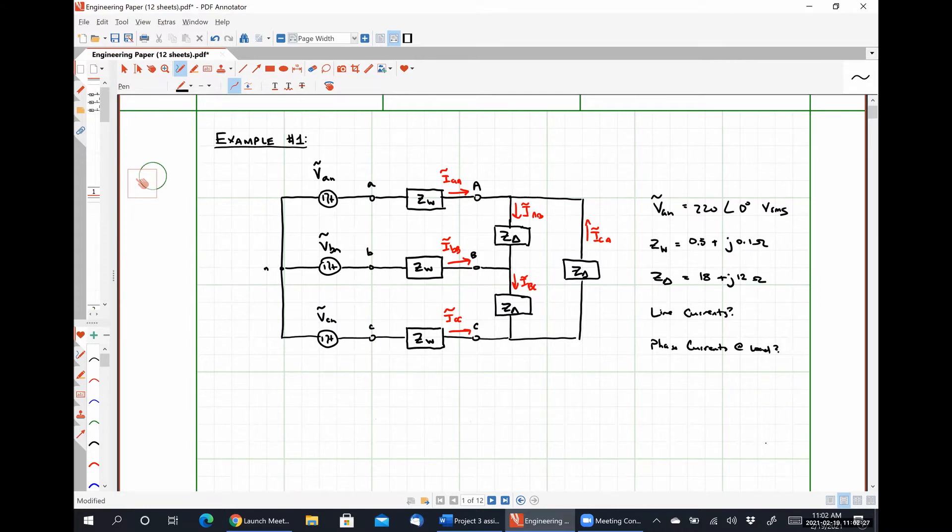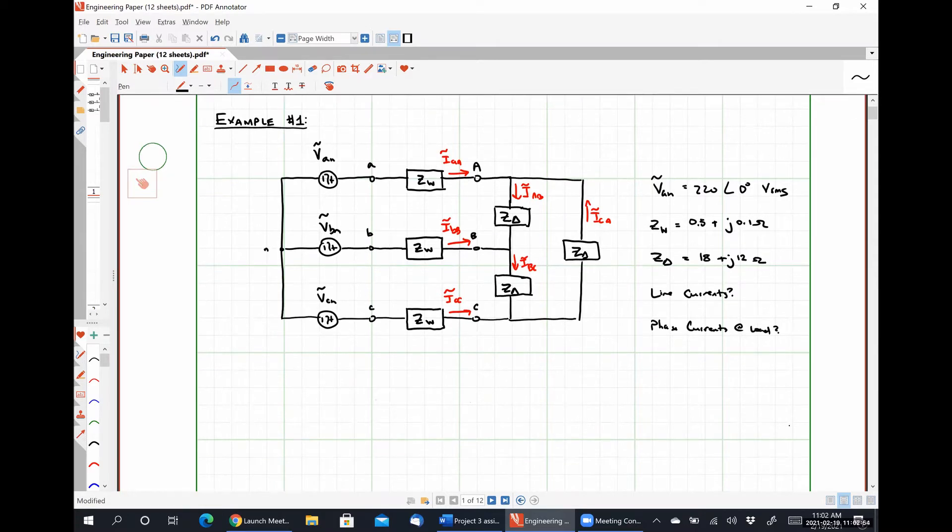So to approach this problem, what we're going to do is we're going to use some of the transformation techniques that we went over last Friday in order to make this circuit look like a yy system so that we can do some circuit analysis. So since the only part of our system that is delta connected in this case is our load, we will simply need to convert our delta load into a y load. Does anybody remember how we go about doing that? Wasn't it just divide everything by three or something? That is exactly right. We simply divide the delta impedance by a factor of three because everything is balanced. So z delta over three, which in this case is fairly simple. Six plus j four.